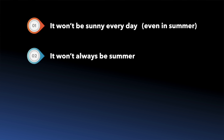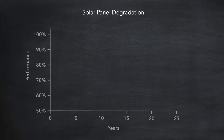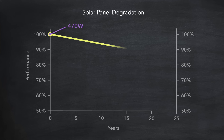Thirdly, your solar panels will degrade over time. When new, they operate at peak efficiency, delivering 100% of their rated capacity — in our example, that's 470 watts per panel. But over time, the panels will experience performance degradation. Depending on the make and model, after 25 years this could reduce their efficiency to approximately 85% of their original power output — in our example, just under 400 watts.